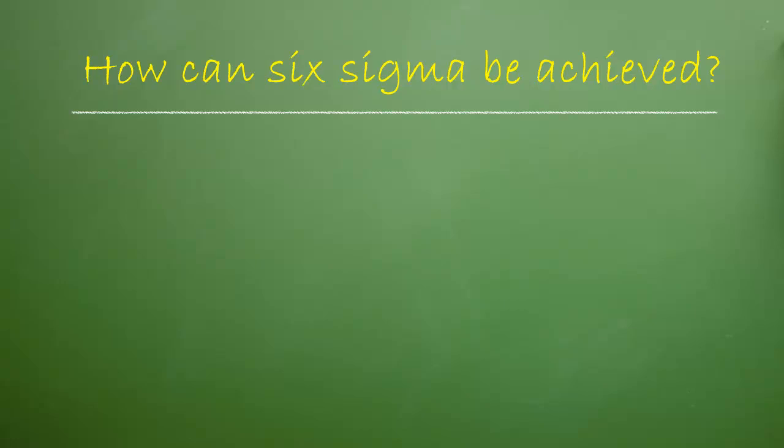So, how is Six Sigma achieved? Well, the simple answer is to choose a test method with a Six Sigma process.